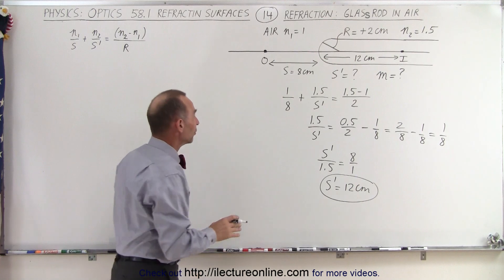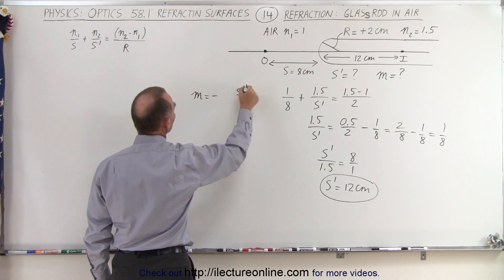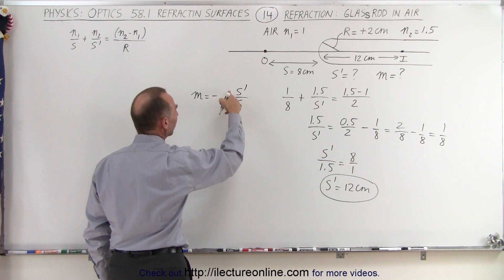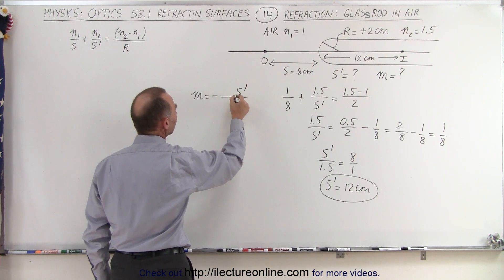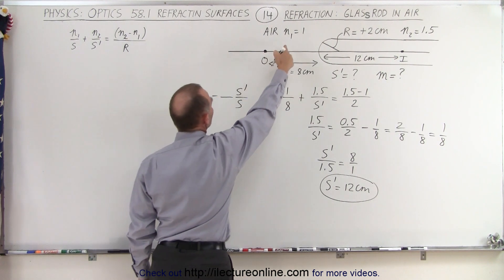And for the magnification, the equation is as follows: m is equal to minus s prime over s, as before, but here we have to take into account the indices of refraction. Over here, we're going to put in the index of refraction of the object,